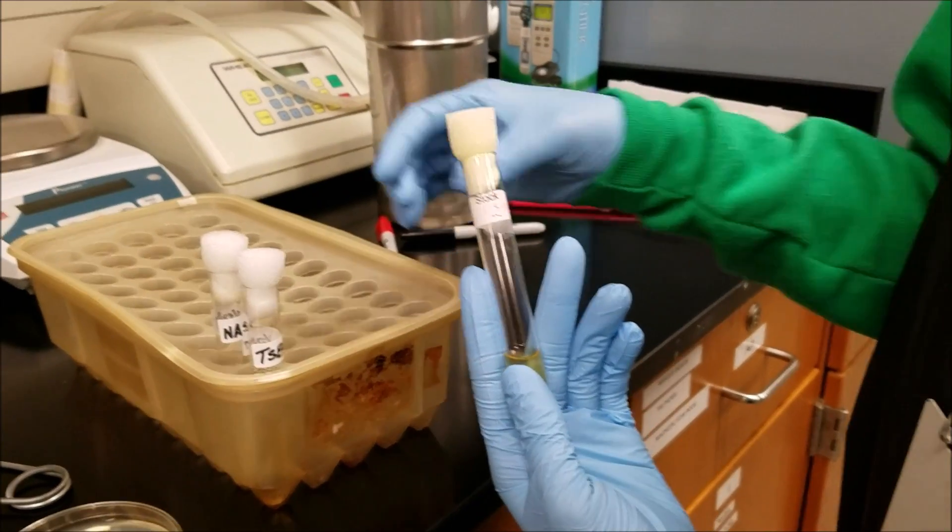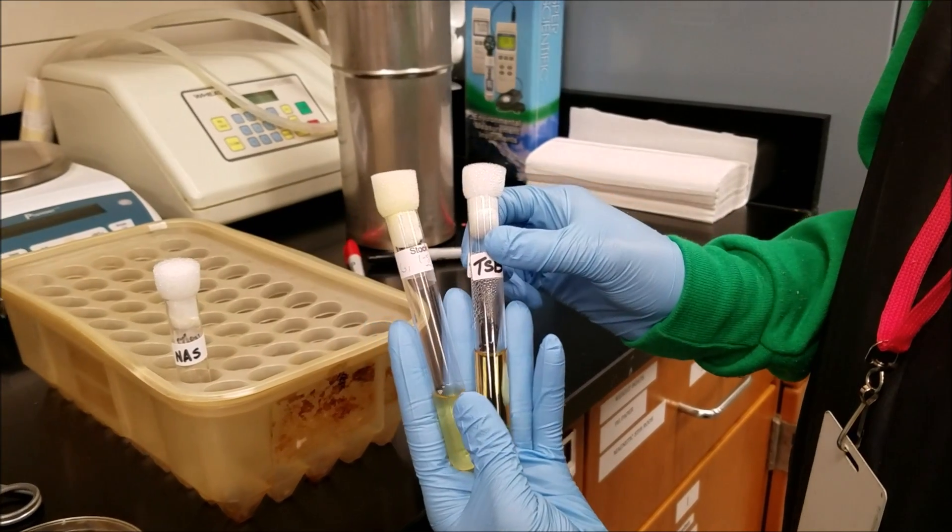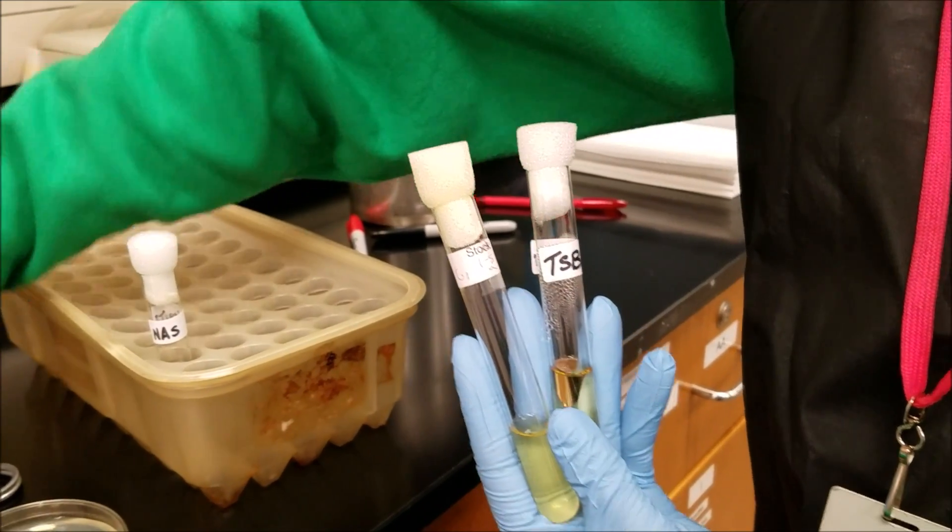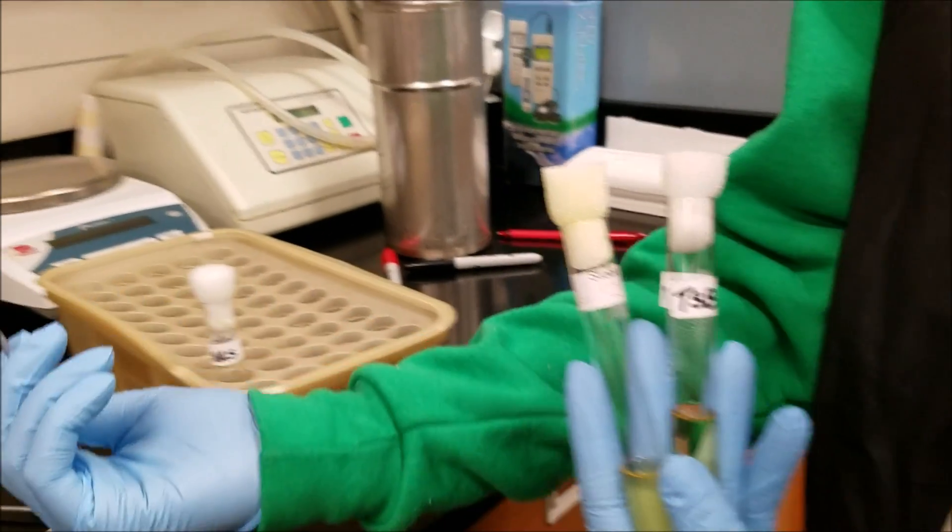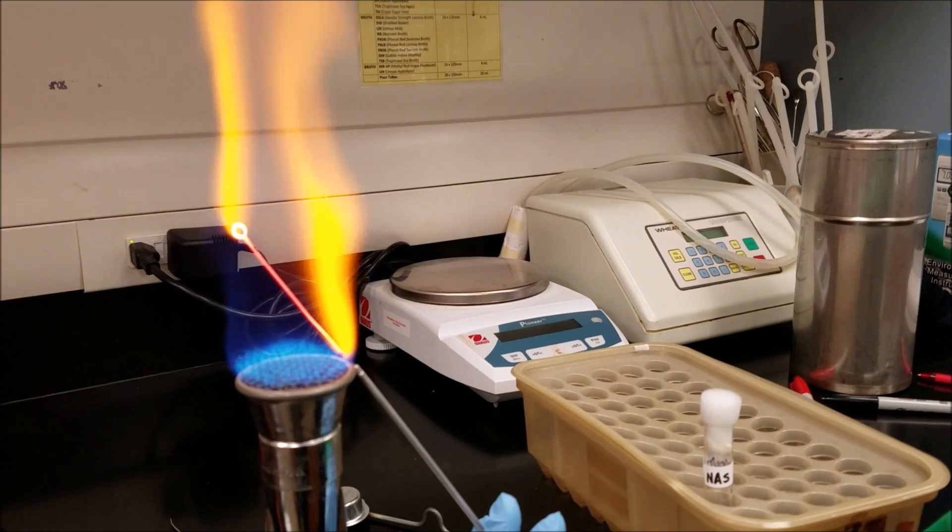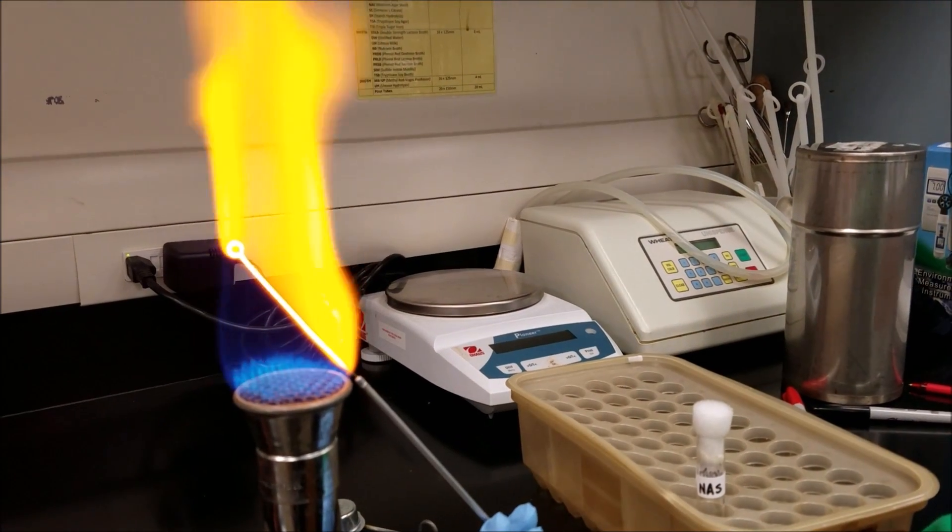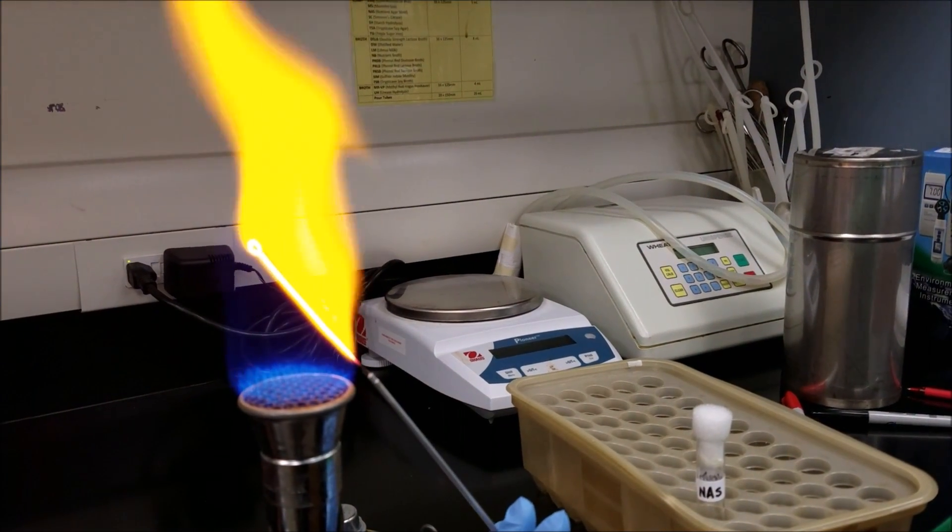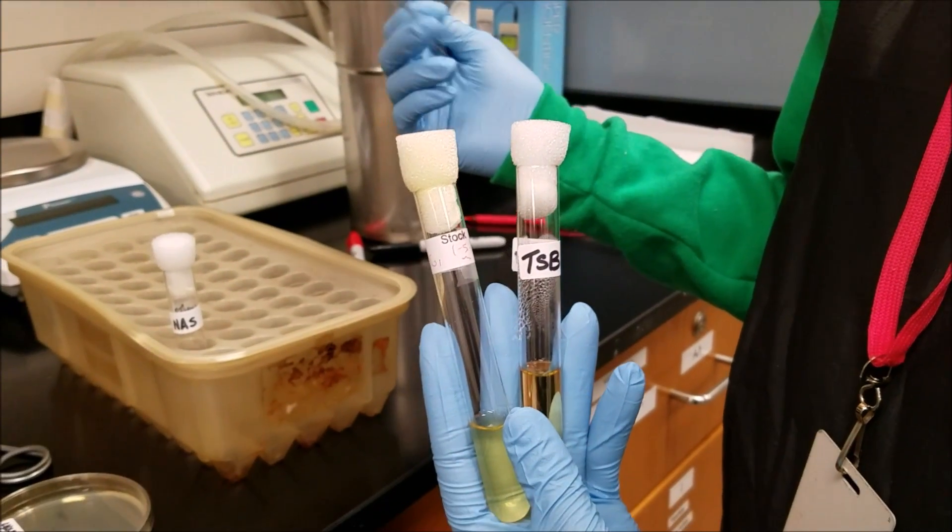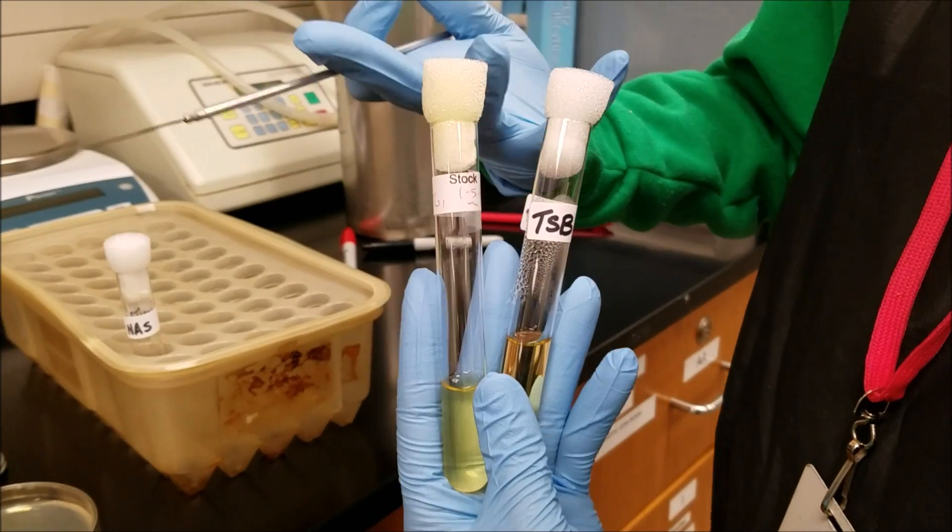First, you're going to pick up your test tubes and place them in your hand in a V-shaped form. You're going to anchor them with your thumb and you're going to pick up your inoculating loop and flame it until it is red-orange hot. This ensures that it will be sterile. You're going to wave it off and make sure that it is cool enough for the bacteria to adhere to.